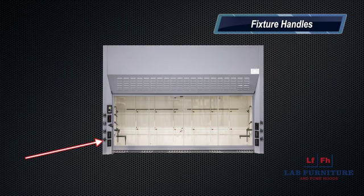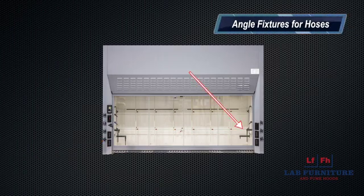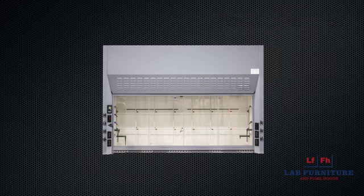The fixture handles on the front of your fume hood control the services on your fume hood. These are individually labeled with the appropriate services. The angle fixtures that are inside of your fume hood are designed to connect the hoses to them for experiments.